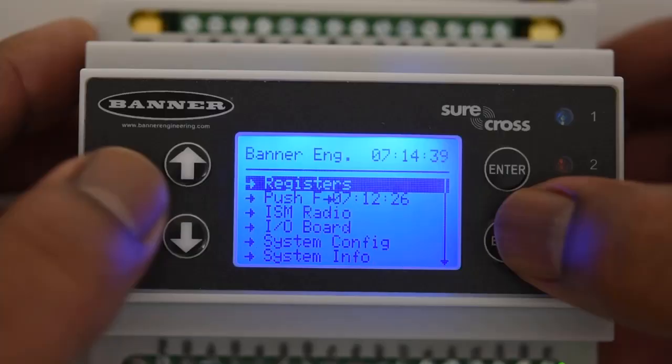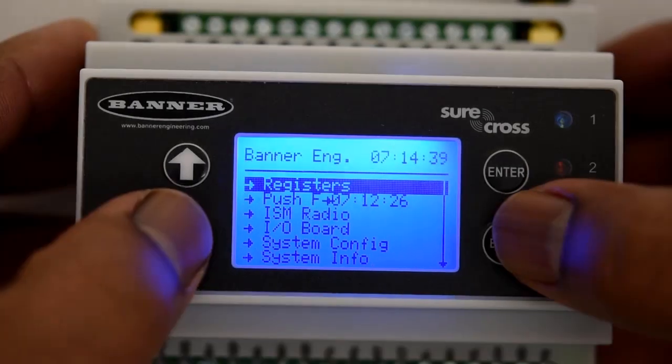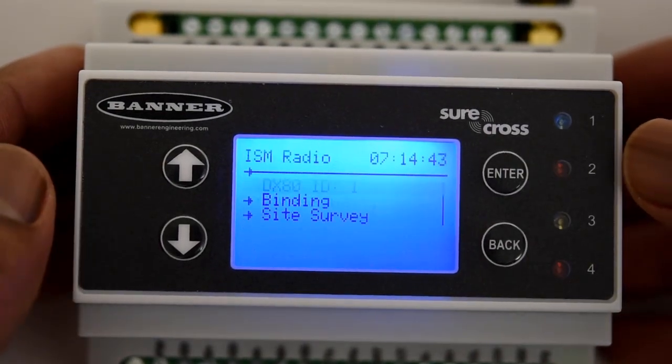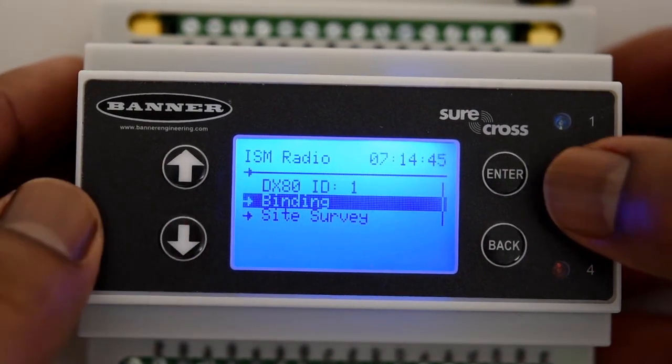So now I'm going to show you how to bind the controller to the wireless node. First, put the controller in the bind mode by scrolling down to ISM radio. Press enter. Then scroll down to binding. Press enter again.